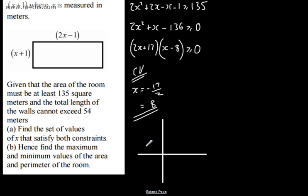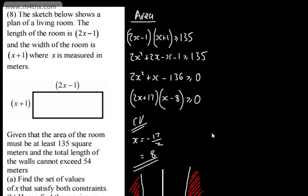So let's sketch this. This is going to be negative 17 over 2, and this is going to be positive 8. We've got something like so. We need to think about where this is equal to or greater than 0. If we were just solving numerically without considering the fact that this is an area problem, this is what we would have.